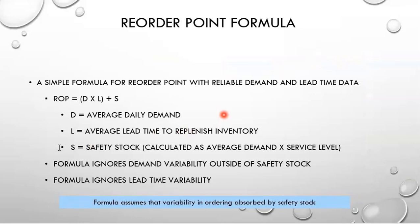The average daily demand is basically your demand forecast over a certain period of time — you take the average of that. Then you multiply that by the average lead time to replenish the inventory, which is the length of time you're going to wait for inventory to arrive. Then you add your safety stock. One thing to notice is that this formula initially ignores demand variability outside of the safety stock. When we use this calculation, we assume that the demand variability will be fully absorbed by the safety stock.